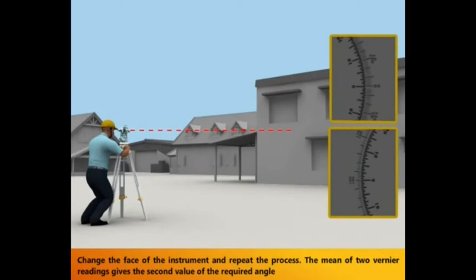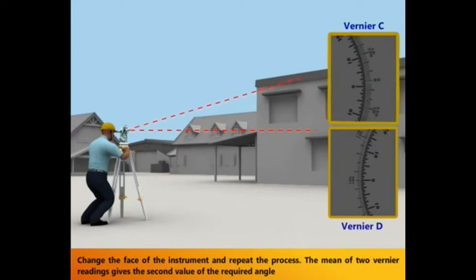Change the face of the instrument and repeat the process. The mean of two Vernier readings gives the second value of the required angle.